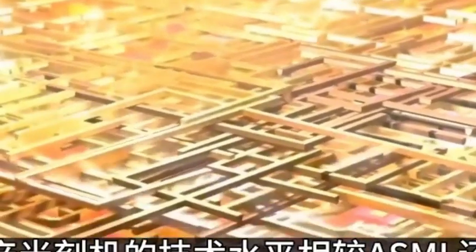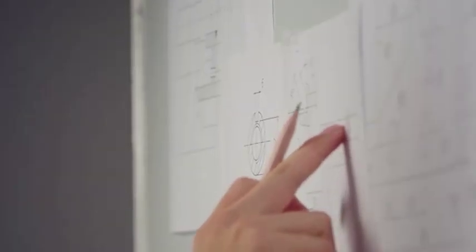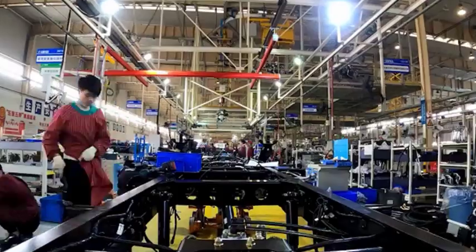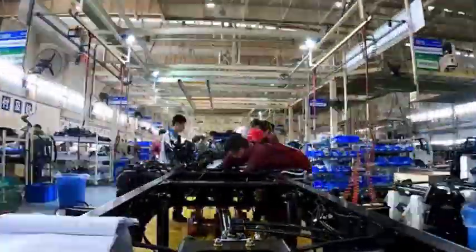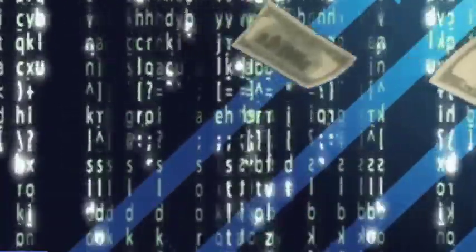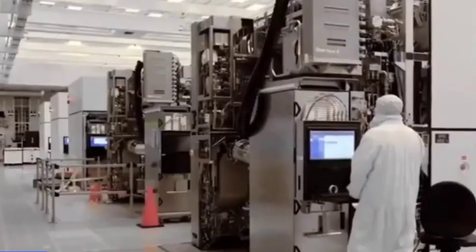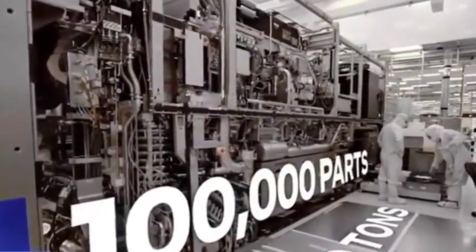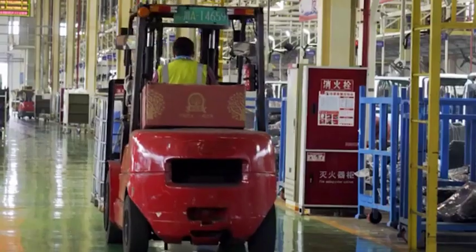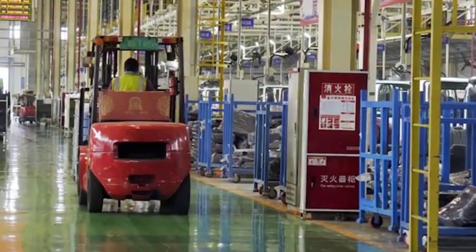ASML continues to ship lithography machines. What people did not expect was that in addition to the rebellion of the giant Meishin and the sudden change of face of TSMC, ASML also expressed its dissatisfaction with the ban. Previously, in order to block Chinese chip manufacturers from obtaining advanced chip equipment, the United States, Japan, and the Netherlands signed a tripartite agreement to restrict the shipment of photolithography machines. At that time, ASML expressed opposition many times. However, the Netherlands announced that it would restrict the shipment of 2000i and subsequent models of DUV lithography machines starting from September 1. ASML also stated that it would comply with Dutch export controls.